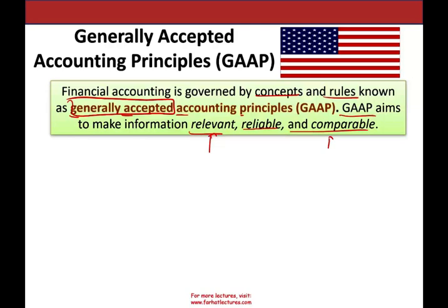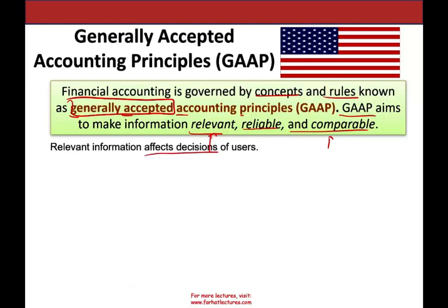What does relevant mean? When information is provided, it has to be relevant — meaning it affects the decision of users and helps them make a decision. For example, if you want to invest in a company, you want to know about the company's profit, debt, and ability to sustain its current operations. That's relevant information — the accounting information you provide has to help them make a decision.